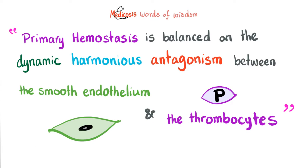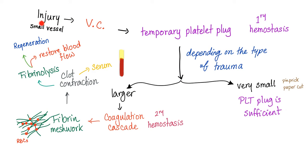Here is the story: you injure yourself. Vasoconstriction of the vessel occurs. Temporary platelet plug — primary hemostasis — forms, depending on the type of trauma. If the trauma is very small, such as a paper cut, the platelet plug is sufficient. But if it's larger, we need the coagulation cascade — secondary hemostasis — to convert fibrinogen into fibrin, laying down a strong meshwork, trapping red blood cells, forming a clot. Then the clot contracts, producing serum. Then we have fibrinolysis to destroy the fibrin clot and restore function, and then we regenerate the tissue.